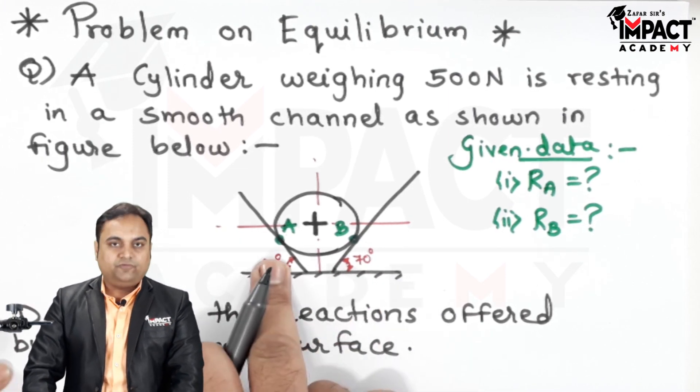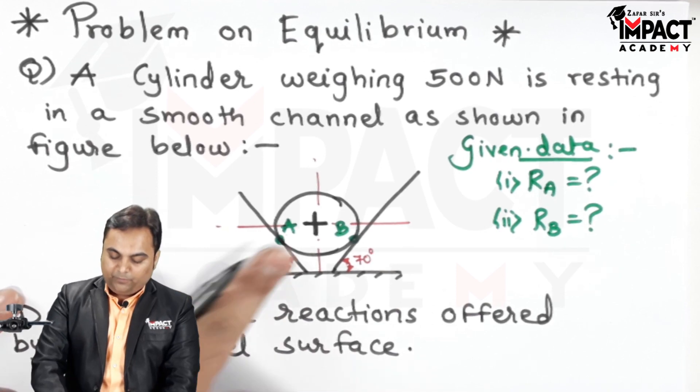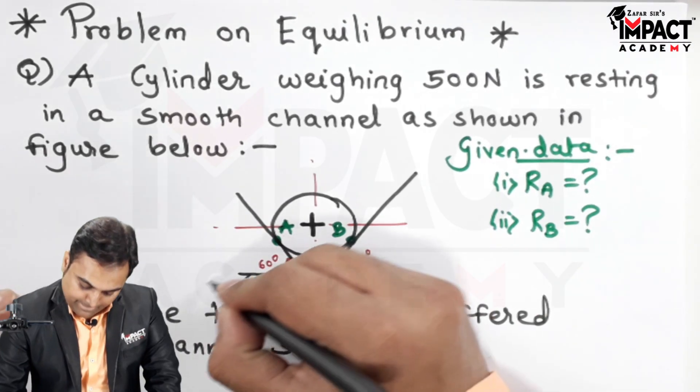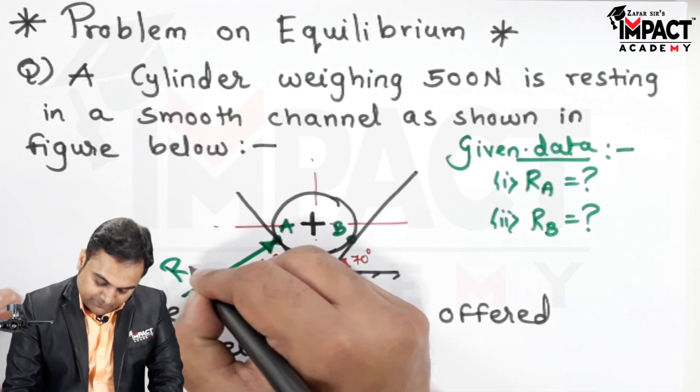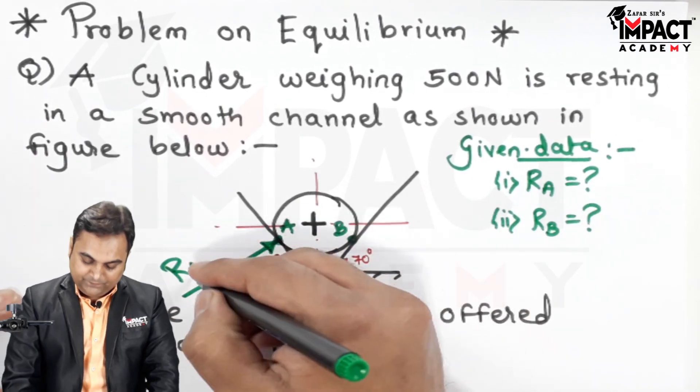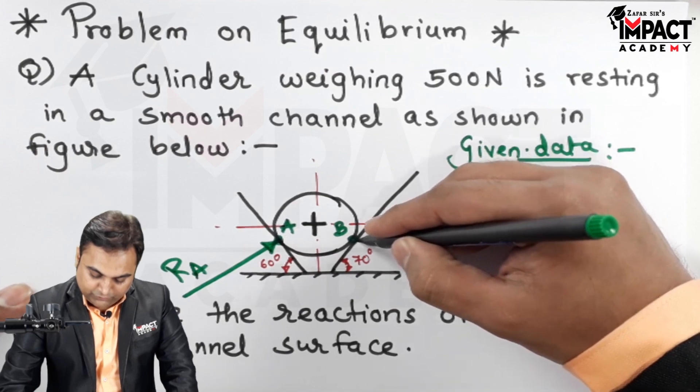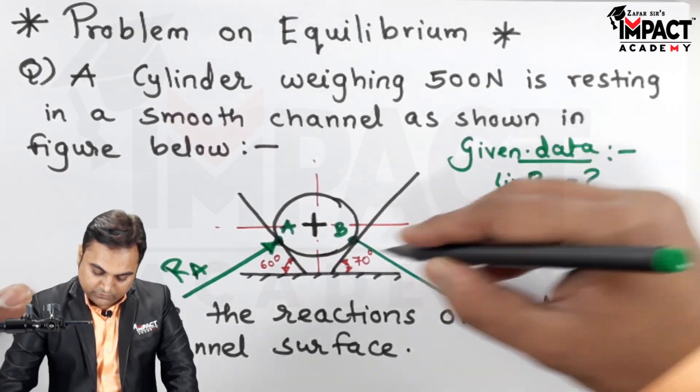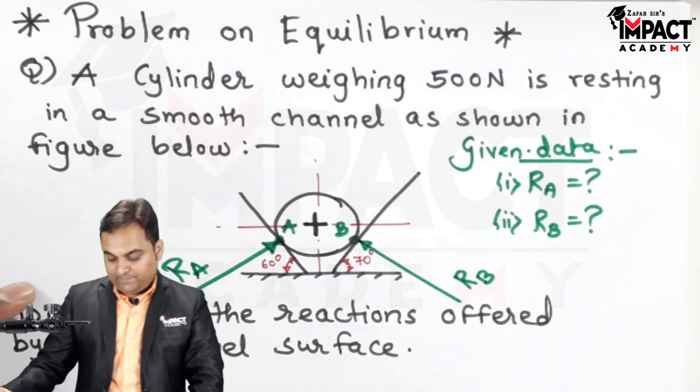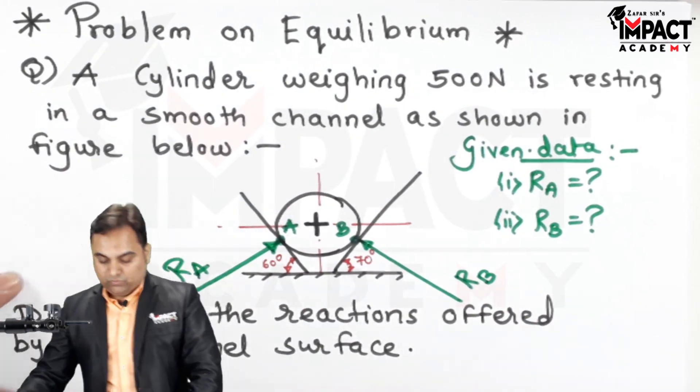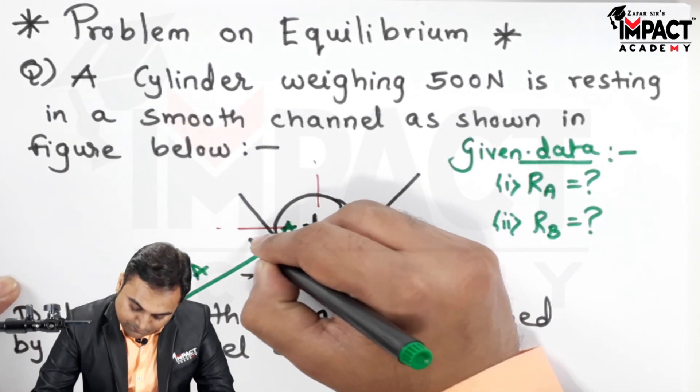Now remember when the weight of the cylinder would be acting in the downward direction, the reaction offered by the supports are always perpendicular to the surface. So this would be the reaction offered by support A which is RA, similarly perpendicular to this plane, reaction offered by B.